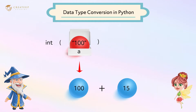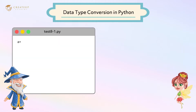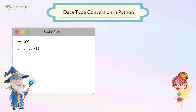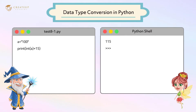So, we use the int() function to convert the string to an integer and then calculate it. Create a new file in IDLE and write the code like this. Save and then run it. Now we've done the math — we were able to calculate it by converting the string type '100' to the number 100.